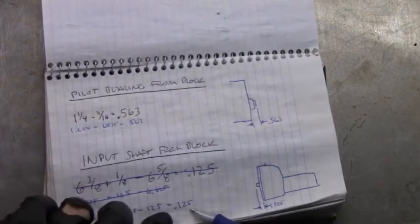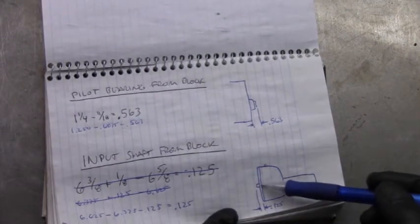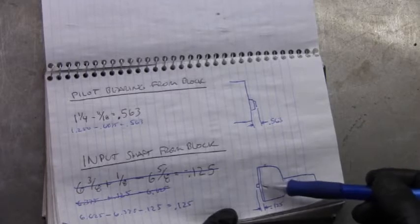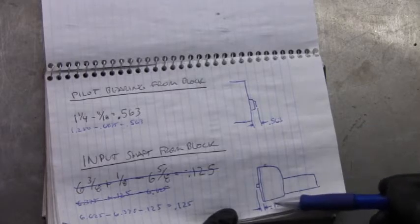And I come out with 0.125. So basically the end of the input shaft sticks out 0.125 from the protector plate.